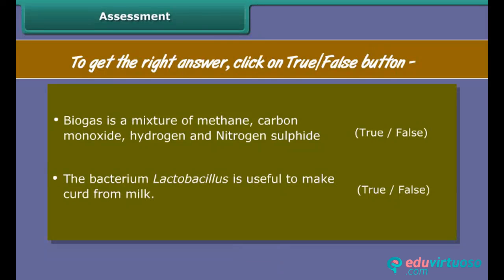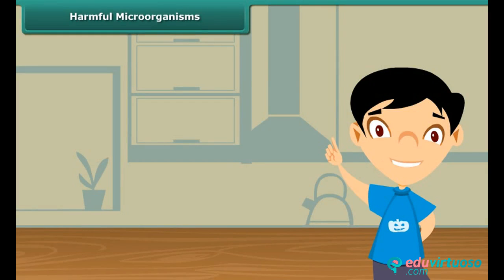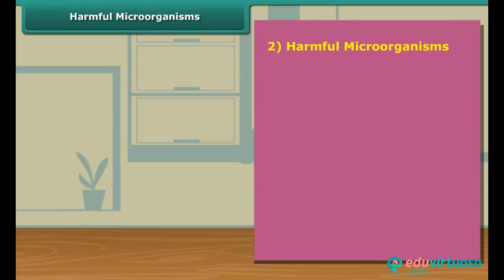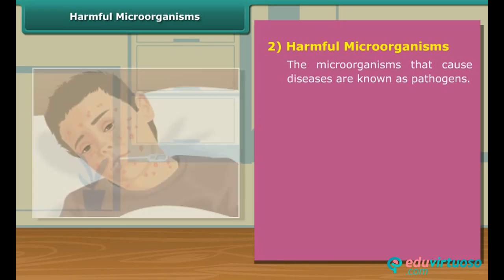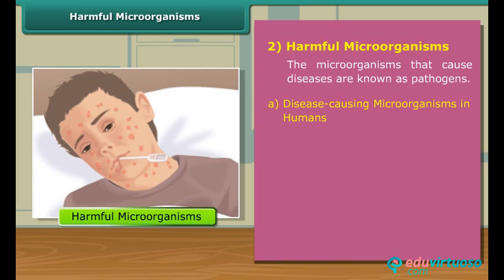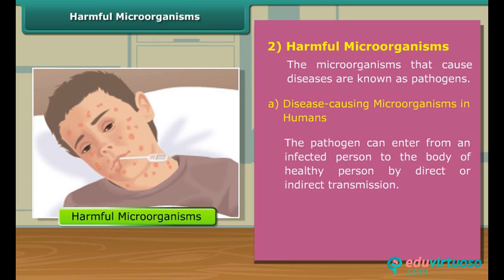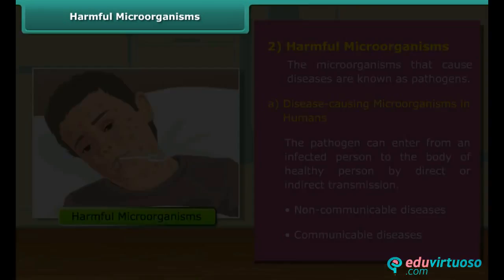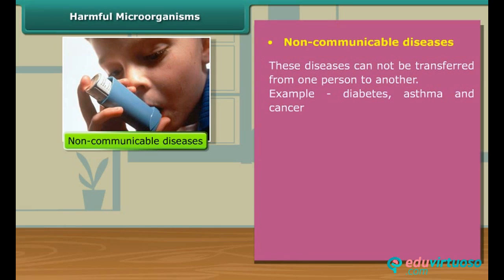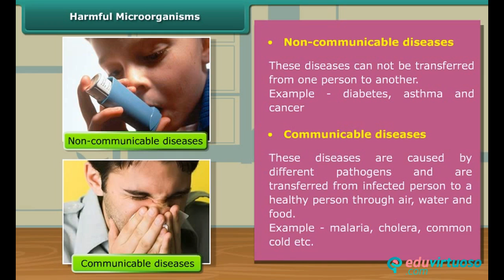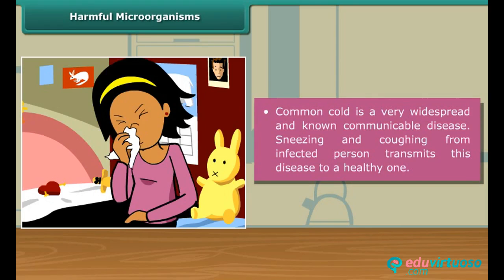Now let's learn about harmful microorganisms. Microorganisms that cause diseases are known as pathogens. We can classify diseases into two categories: non-communicable or non-infectious diseases, and communicable or infectious diseases. Non-communicable diseases cannot be transferred from one person to another, while communicable diseases are transferred from an infected person to a healthy person by means of air, water, food, etc. Common cold is a very common example of a communicable disease.